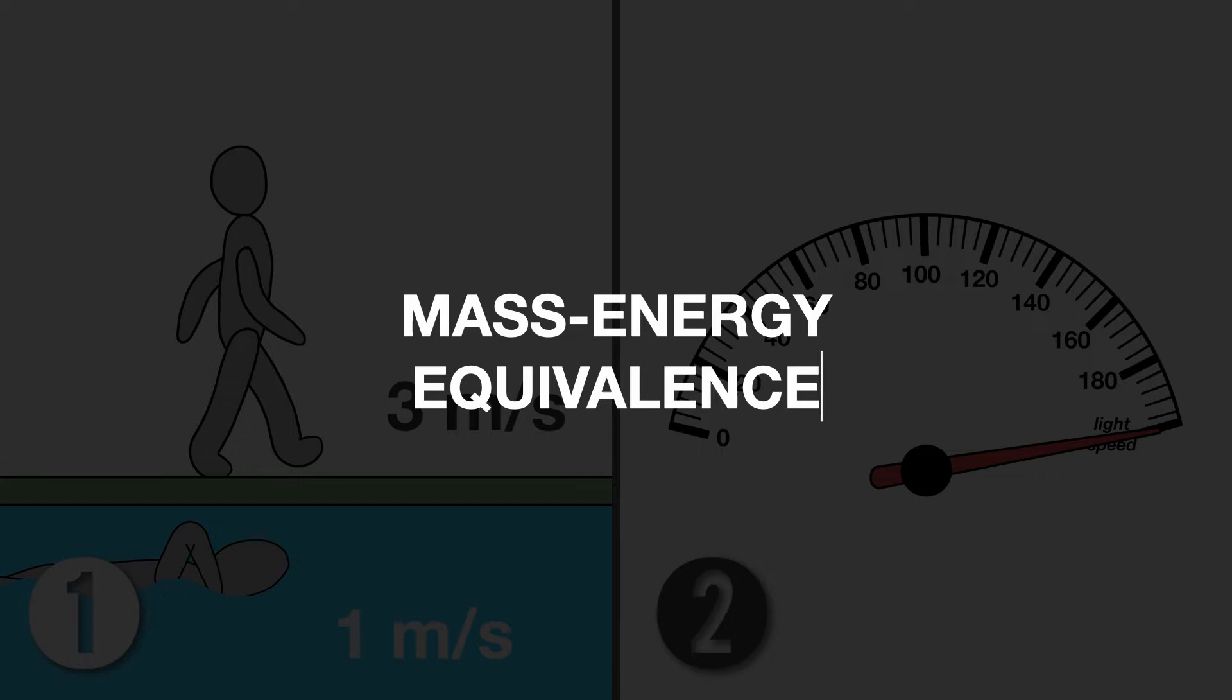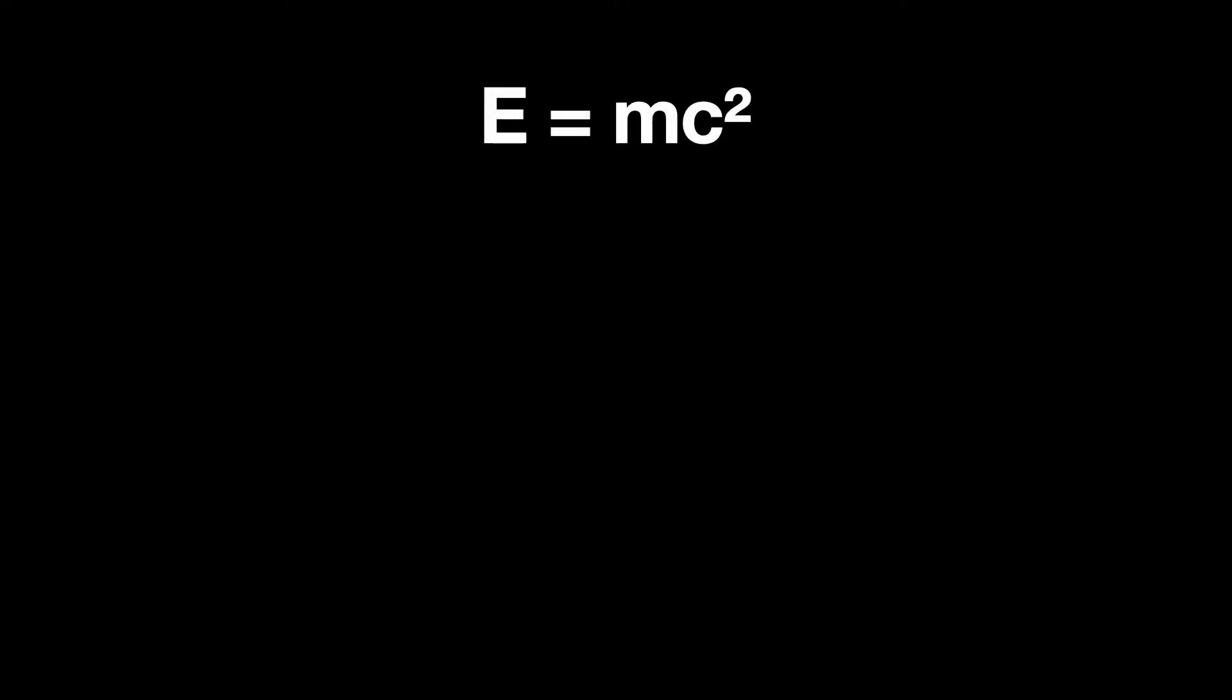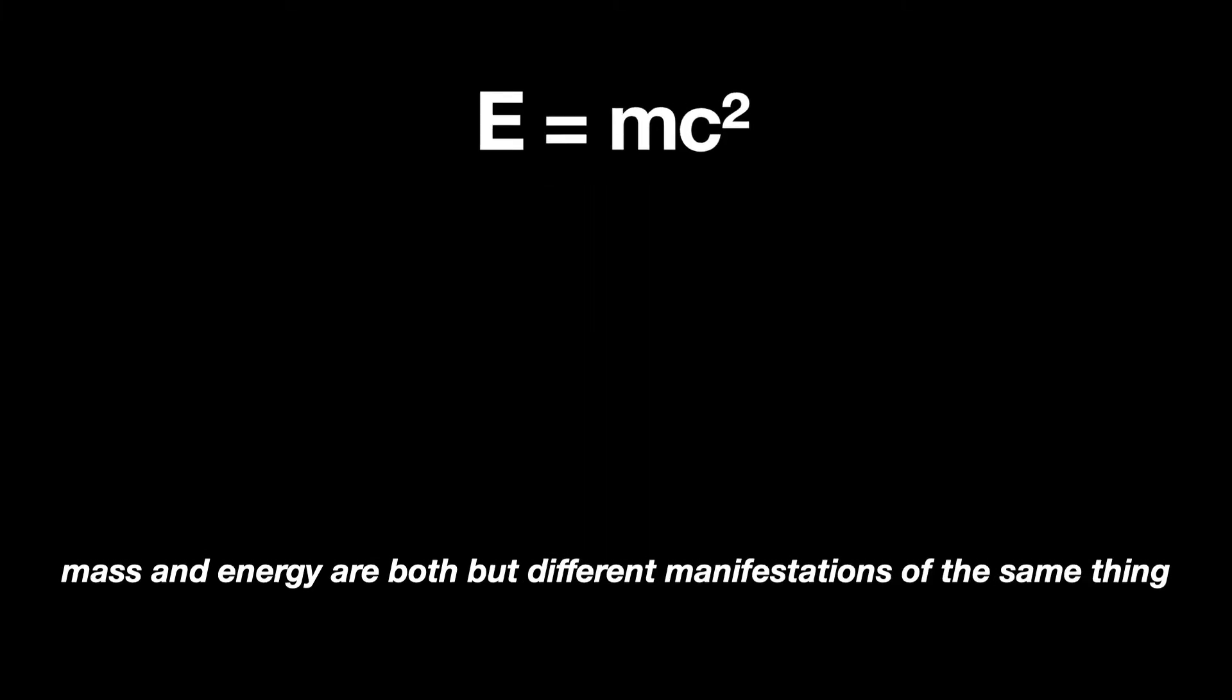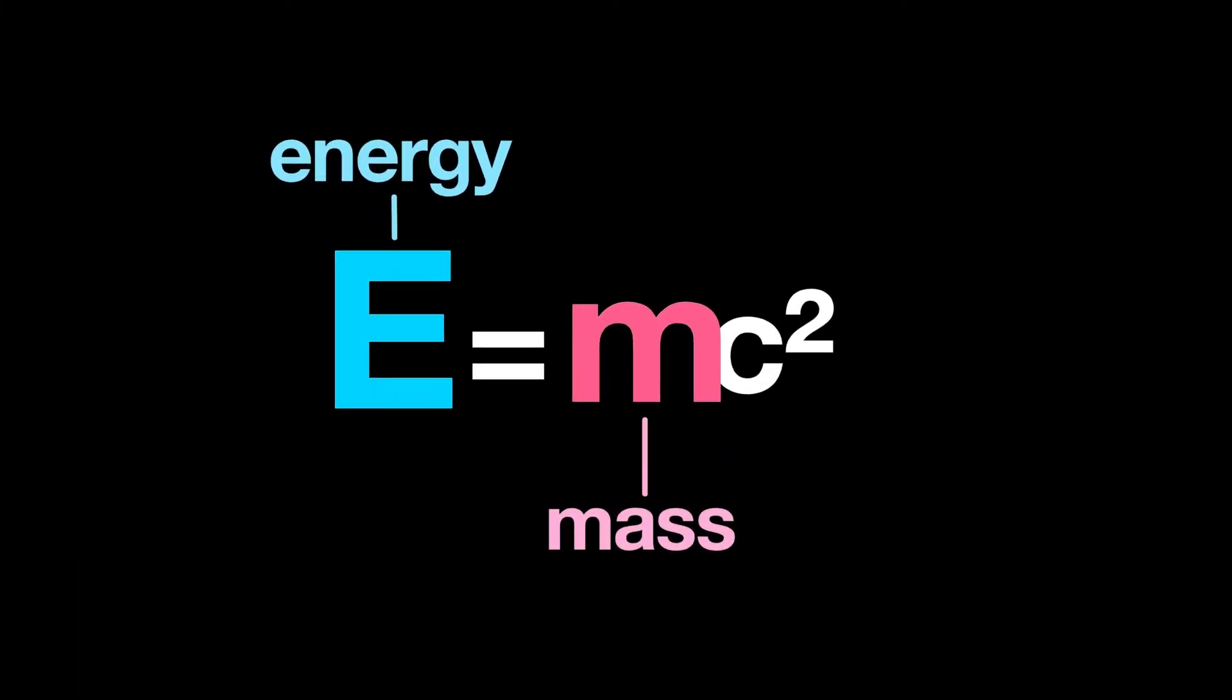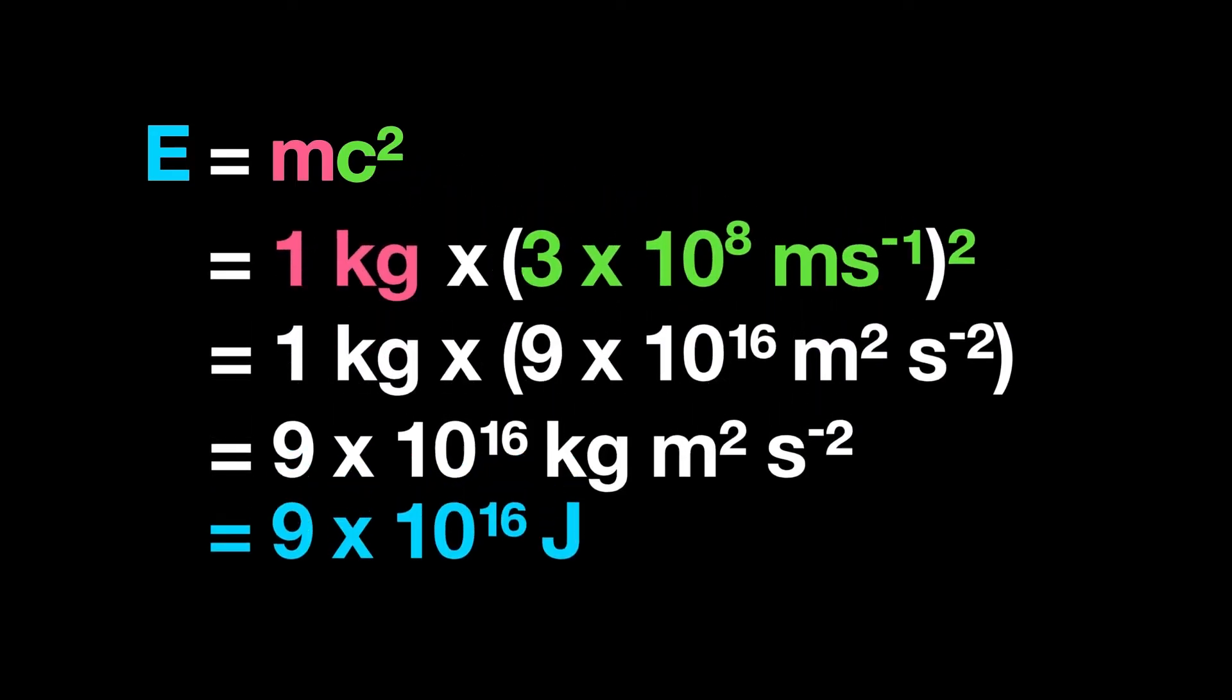These led to important consequences, including mass-energy equivalence. According to the famous equation E equals mc squared, mass and energy are both different manifestations of the same thing. Mass and energy are equivalent and are converted into each other through the conversion factor of the speed of light squared. This incredibly large number means that a very small amount of mass may be converted into a very large amount of energy.